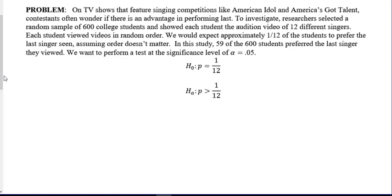contestants often wonder if there's an advantage in performing last. Like, you're more recent in their memory. There's a lot of reason why you might think they saved the votes. So to investigate, researchers selected a random sample of 600 college students, important number, and showed each student the audition video of 12 different singers. Each student viewed the videos in random order, very important word there, random. We would expect one twelfth of the students to prefer the last singer if we assume that order doesn't matter. We want to perform a significant test at level, alpha level of .05.